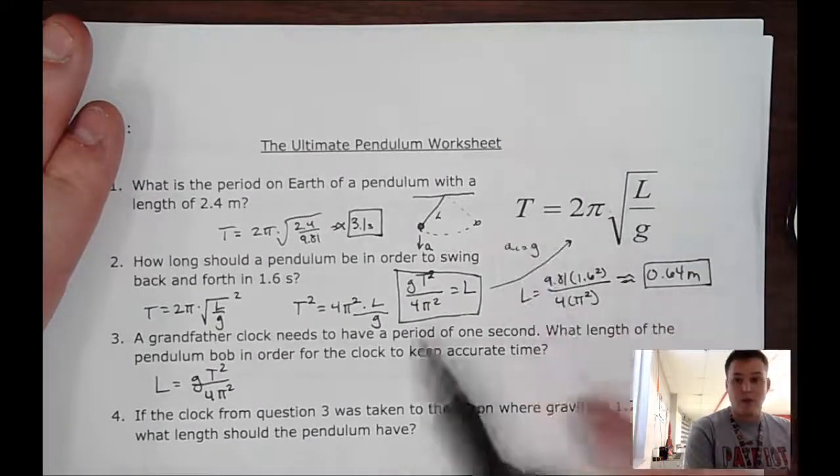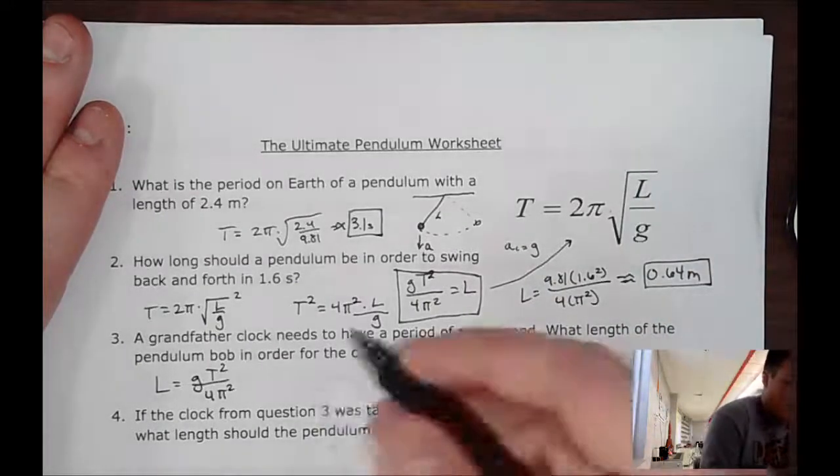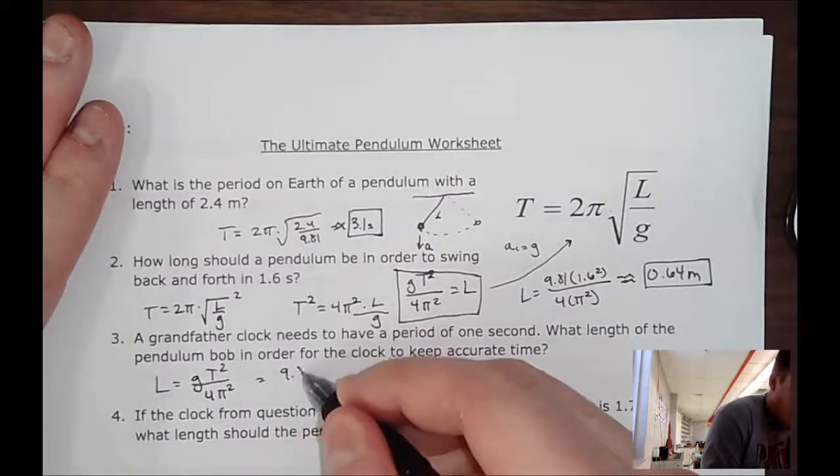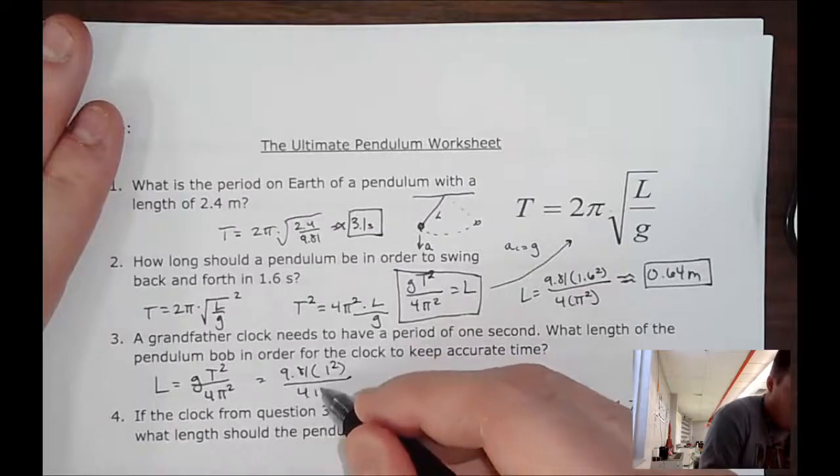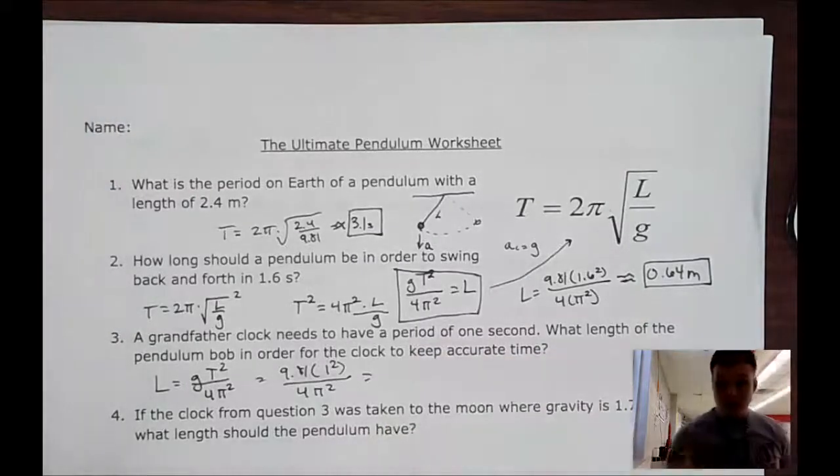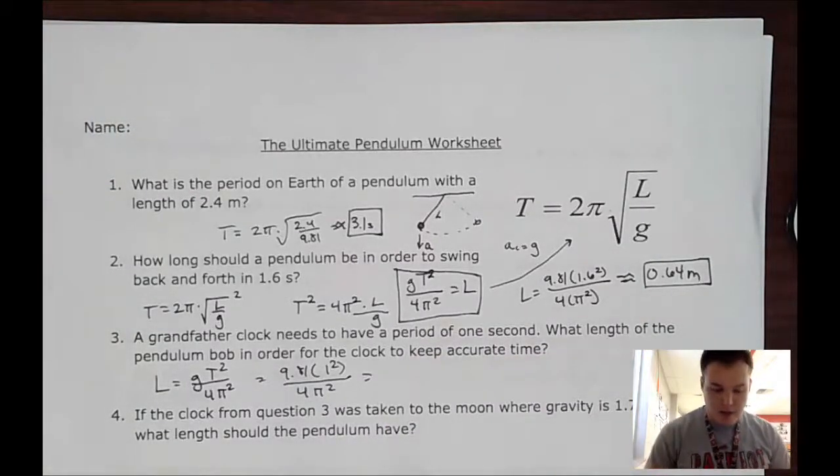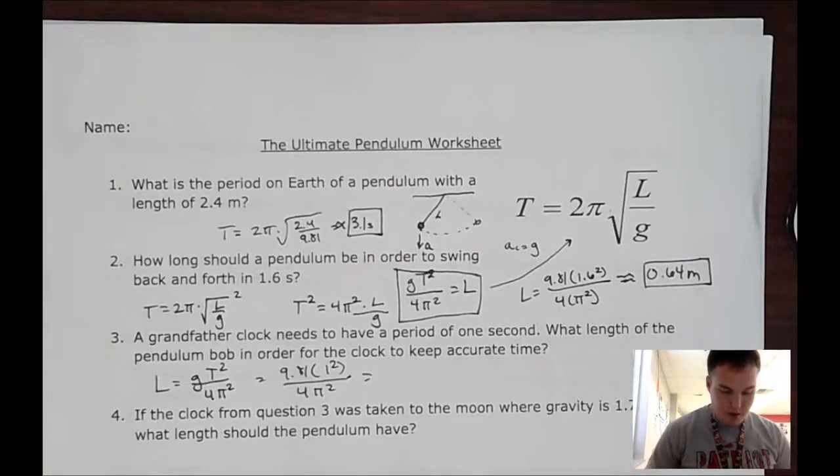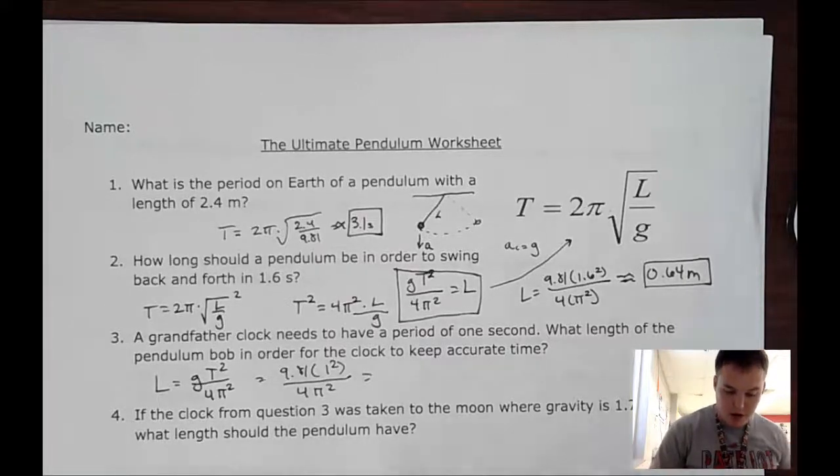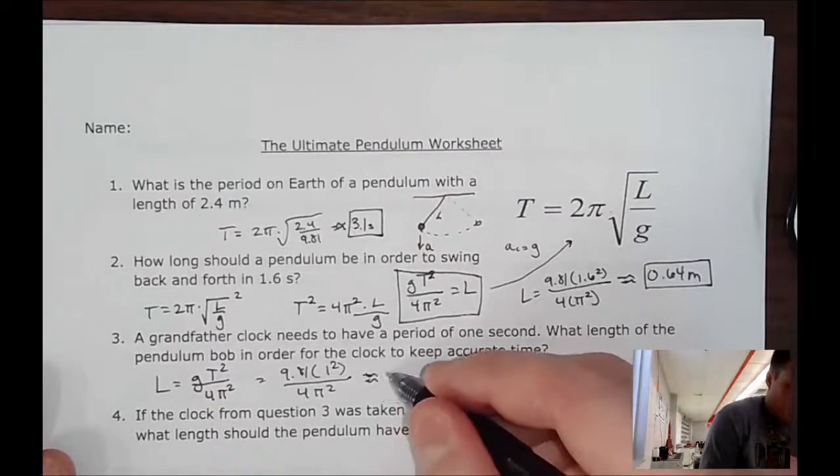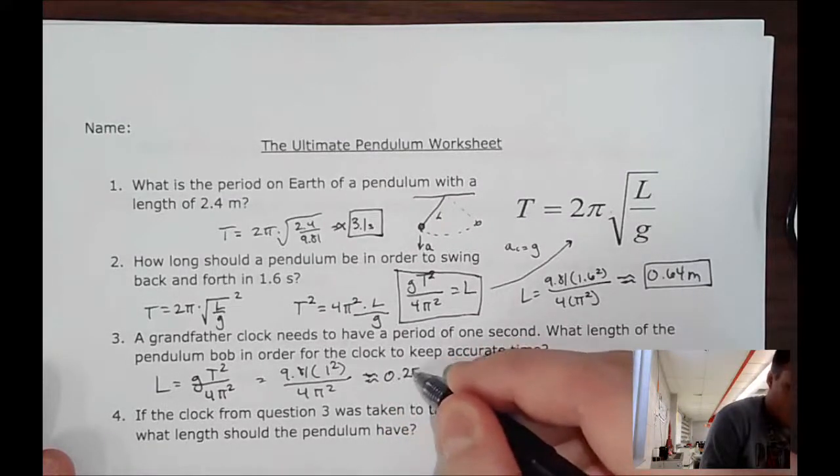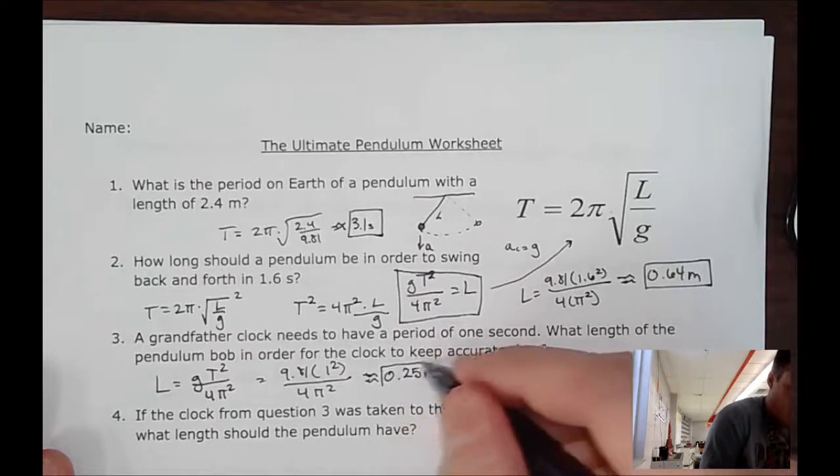So now I can just do 9.81 times 1² divided by 4π², and that will tell me how long the pendulum arm has to be for it to make a period of one second. So 9.81 times 1² divided by 4π². We'll get approximately 0.25 meters, so a quarter of a meter will give me a period of one second.